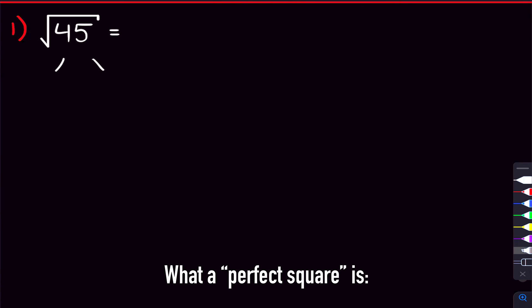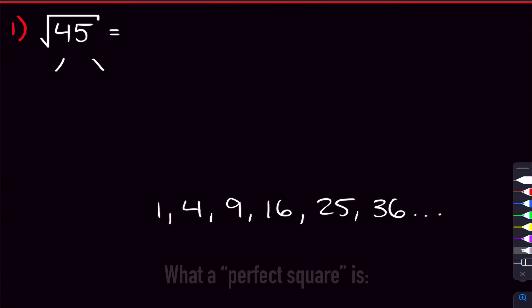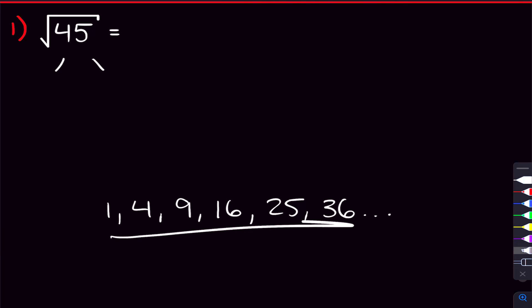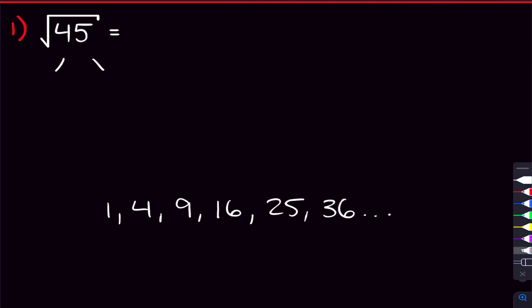Perfect squares are all the numbers that you can take the square root of and get something nice — so 1, 4, 9, 16, 25, 36, and so on. The square root of 1 is 1, the square root of 4 is 2, the square root of 9 is 3, and so on and so forth. But if we had a number like 5, that's not a perfect square because we can't take the square root of 5 and get something nice.